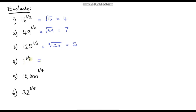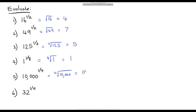Question four: 1 to the power one eighth — we take the eighth root of 1. Some number multiplied by itself eight times gives 1. That is 1 — not a trick question! Question five: the fourth root of 10,000. That is 10, because 10 times 10 is 100, times 10 is 1,000, times 10 is 10,000.